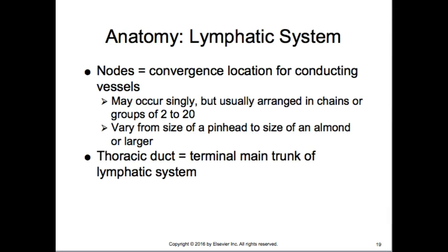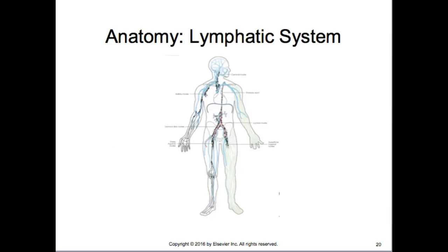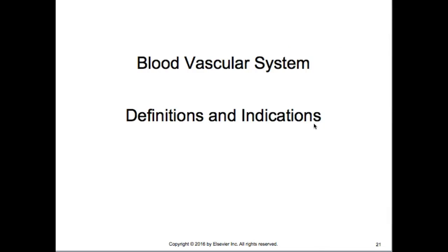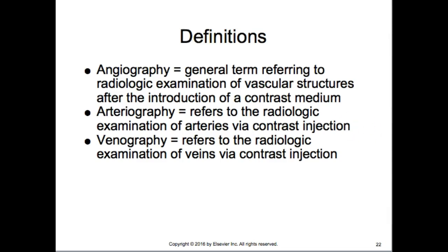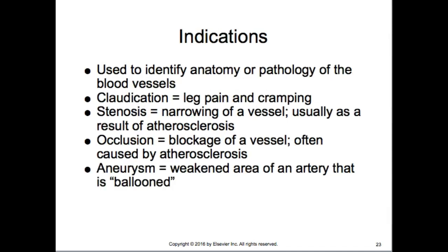The thoracic duct is the terminal main trunk of the lymphatic system. Lymph nodes are found all over the body and become enlarged depending on illness or disease. For the blood vascular system definitions: angiography is a general term referring to radiologic examination of vascular structures after the introduction of contrast medium. Arteriography refers to examination of the arteries with contrast; venography refers to study of the veins after a contrast injection.